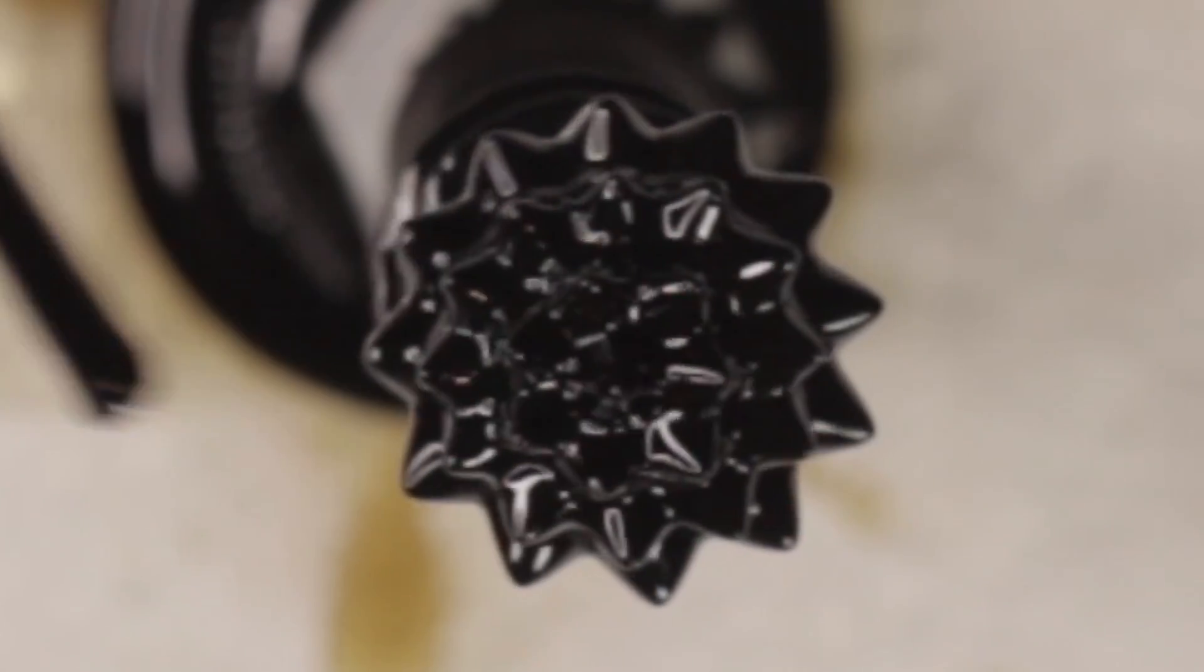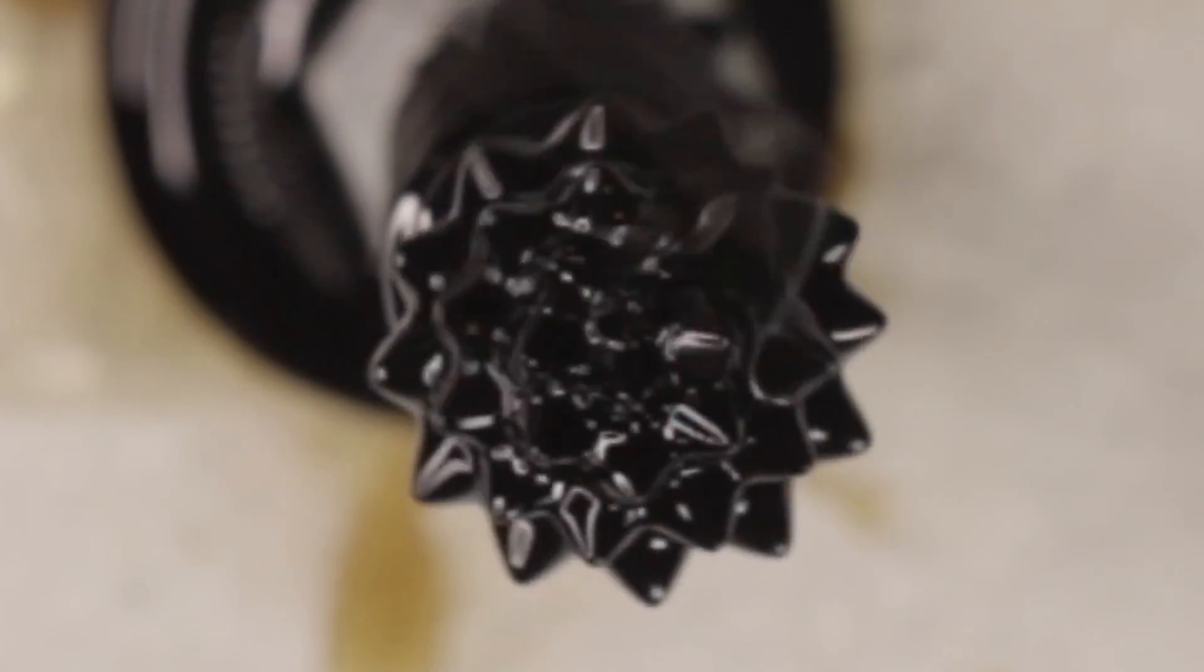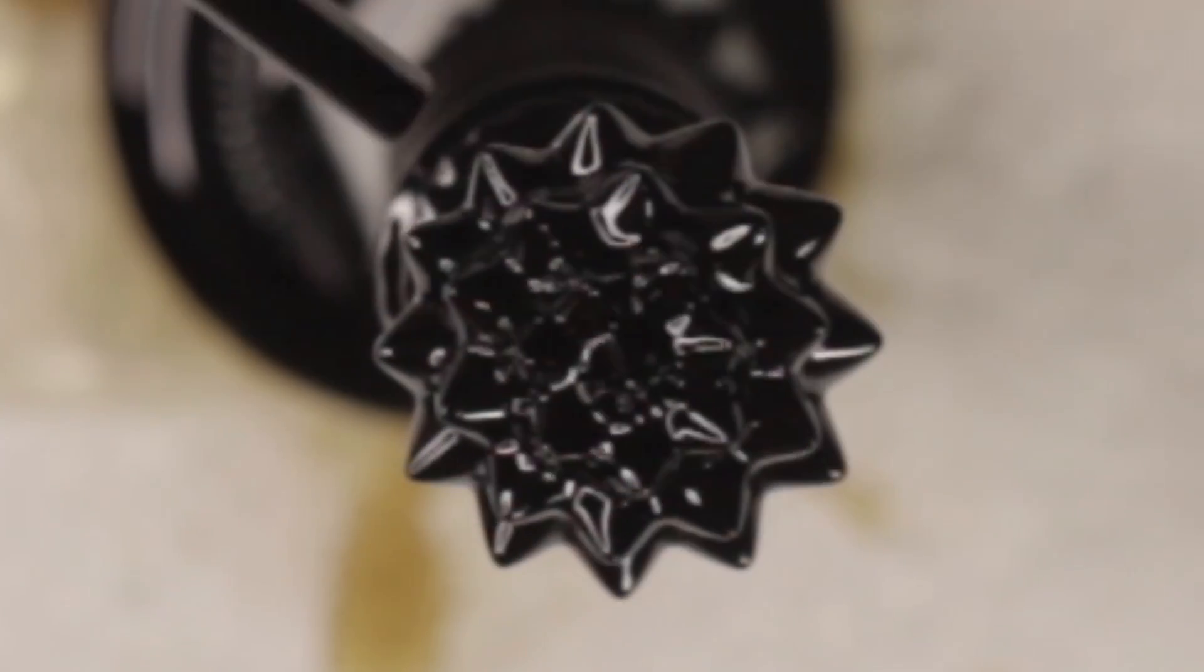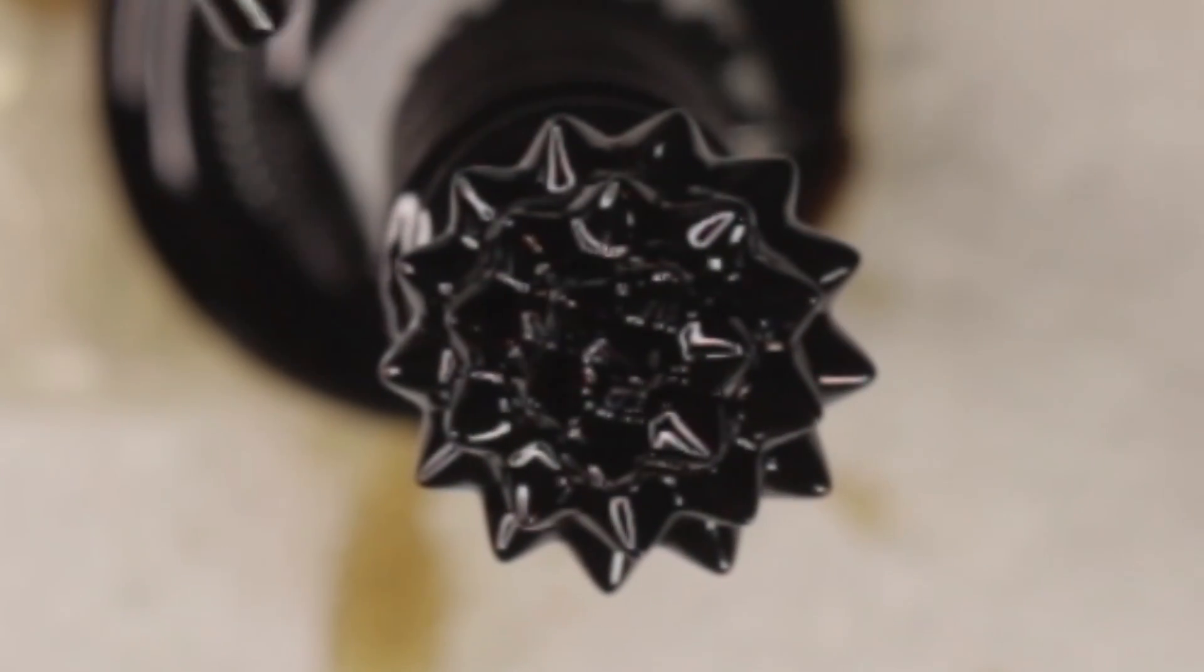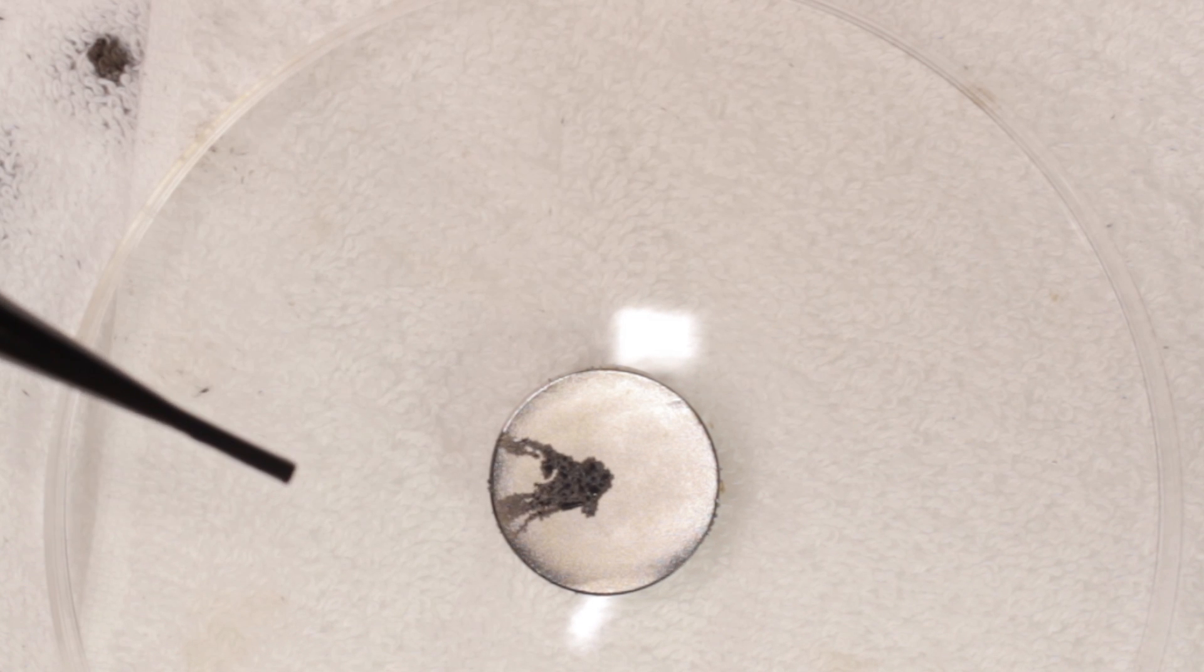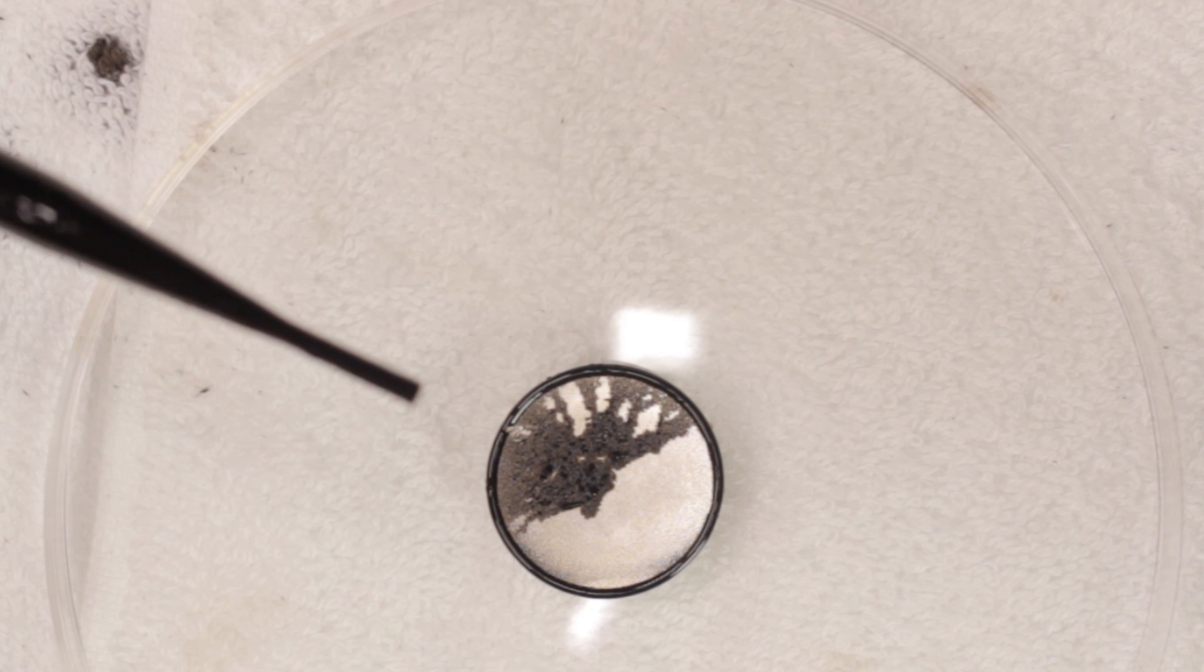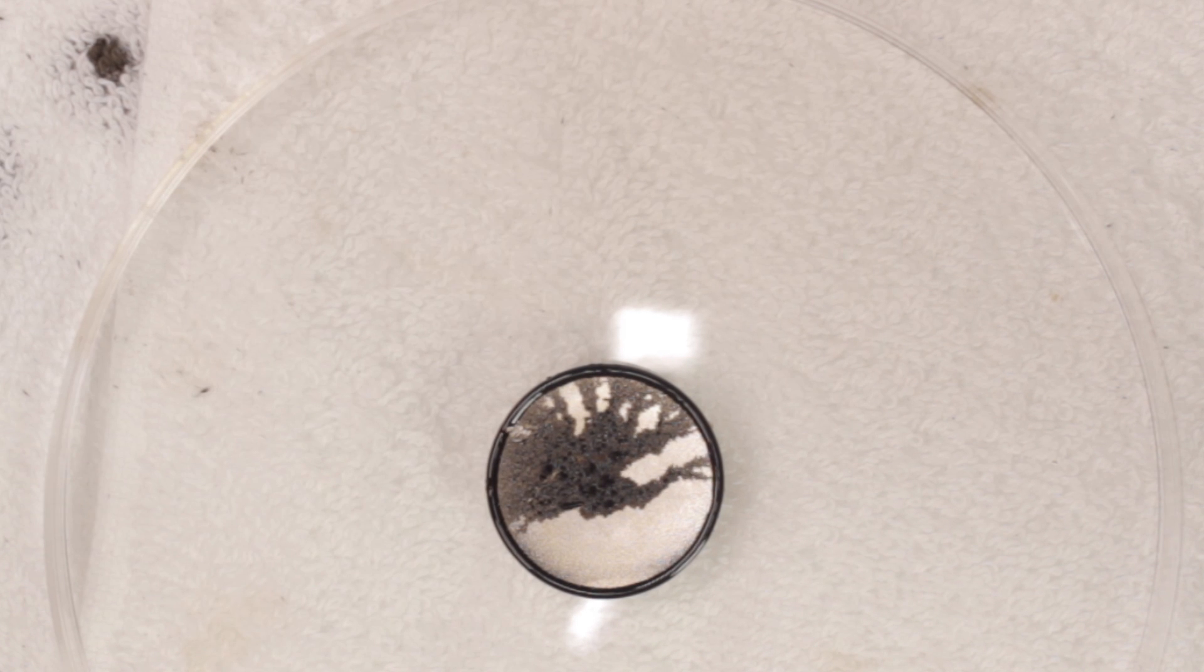Ferrofluids are used for more than just really cool visual displays. They are used to form liquid seals around the spinning drive shafts in hard disks. They are used in mechanical engineering because of their friction-reducing capabilities, which I learned about firsthand. And if applied to the surface of a strong enough magnet, it can cause the magnet to glide across smooth surfaces with minimal resistance. I didn't know that.